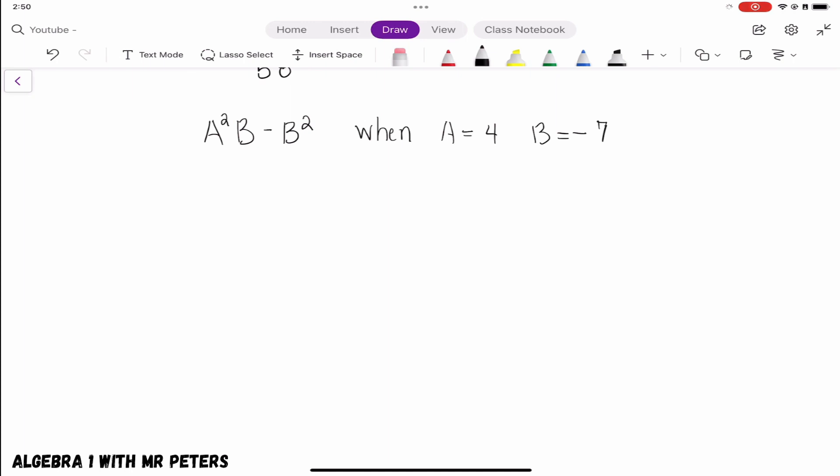So the very big thing that we talked about in the concept right above was putting parentheses around negative numbers, because if we don't, we could make a minor error with the sign. So let's start plugging in our values using the substitution method. So we have 4 squared times negative 7, and then we're going to subtract 7 to the second power, 7 squared, same thing.